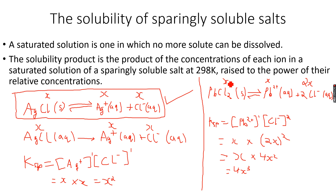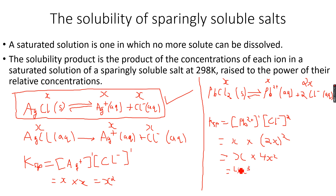So when I know that Ksp = 4x³, if I have the value of x from the concentration of Pb²⁺ ions or the concentration of PbCl₂ (aqueous) — which is the saturated solution concentration — I can use that to calculate the value of Ksp. I write the equation, determine how much is formed from x, write the Ksp expression, substitute x, and calculate the solubility product.